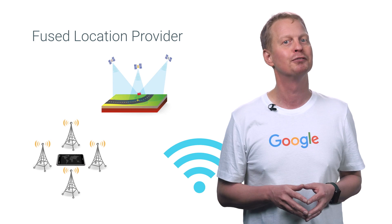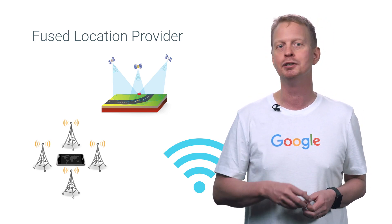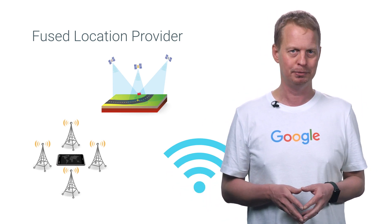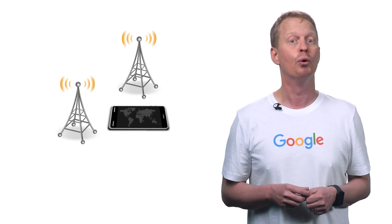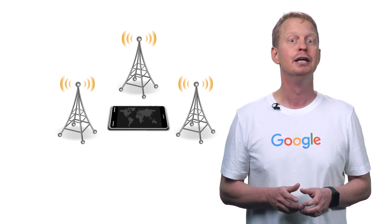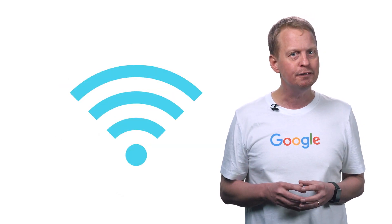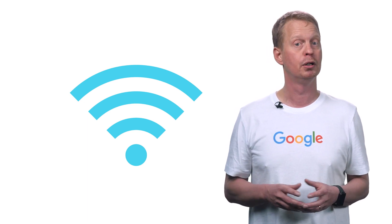We also have some announcements for Fused Location Provider. As you know, Fused Location Provider can combine information using GPS, cell tower, and Wi-Fi signals to accurately determine position. In this release, we have greatly improved how Fused Location Provider detects location from cell towers. Before, location was retrieved using only the primary cell tower. But now, Fused Location Provider also uses other towers nearby to provide accurate location. We've also improved location detection from Wi-Fi access points, particularly in areas where GPS is not available, such as indoors.